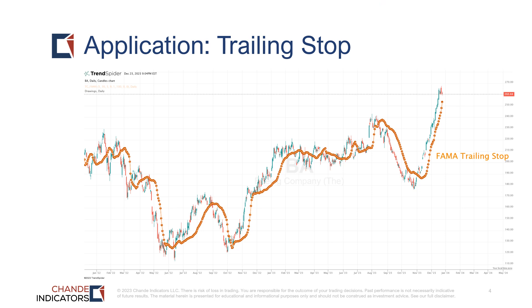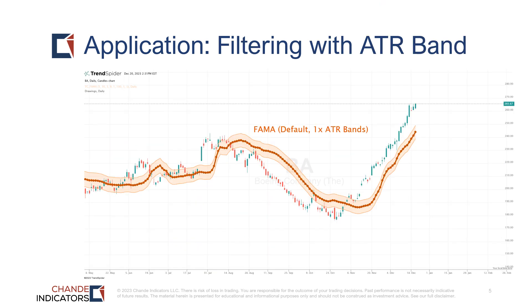A second application of FEMA is filtering with ATR bands. Here we have plotted FEMA with default 1x ATR bands. You can see two things: first, when prices are outside the bands, we can use trend-following strategies so breakouts can be spotted earlier and more clearly; secondly, when the prices are in a trading range, the FEMA bands are wider so you can use them to make counter-trend trading strategies.